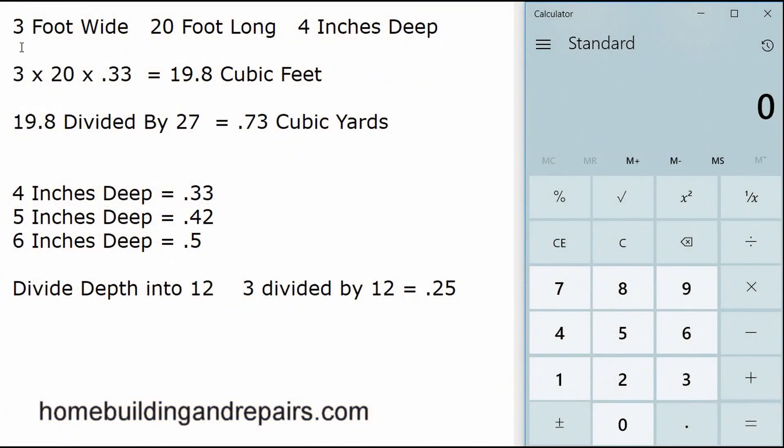Now for the math: we have a three-foot wide by 20-foot long walkway that's four inches deep. We will multiply 3 times 20 times 0.33, and that's going to give us 19.8 cubic feet. This is the way to figure out cubic feet. You can always figure out cubic inches and break it down, but I think this is the easiest way.